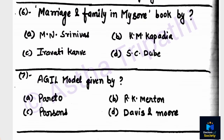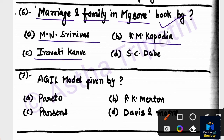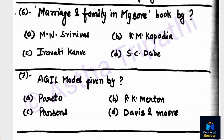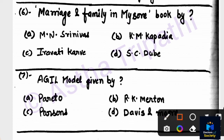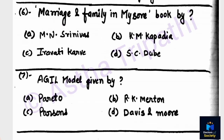Question number six: The book 'Marriage and Family in Mysore' — who is the author? Options are M.N. Srinivas, K.M. Kapadia, Irawati Karve, S.C. Dube. The author is M.N. Srinivas — option A is the correct answer. 'Marriage and Family in Mysore' was written by M.N. Srinivas.